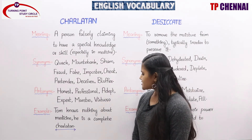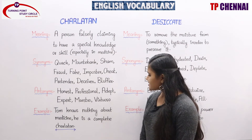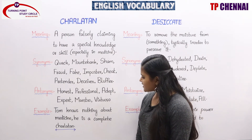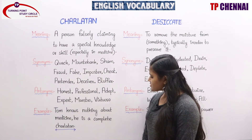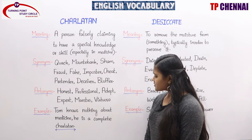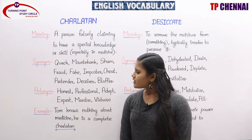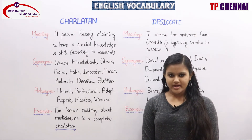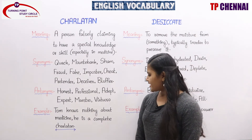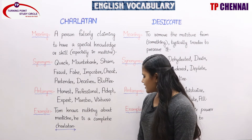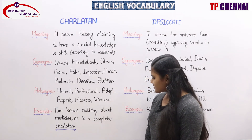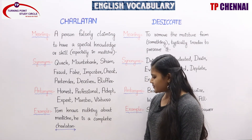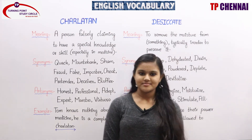Antonyms: honest, professional, adept, expert, maestro, virtuoso. All these words can be related to antonyms. Example: Tom knows nothing about medicine. He is a complete charlatan.